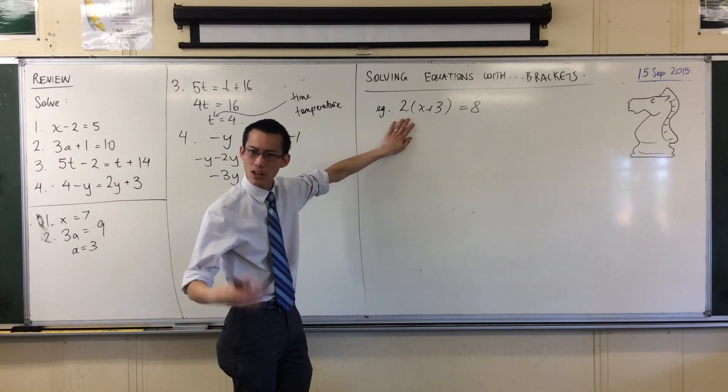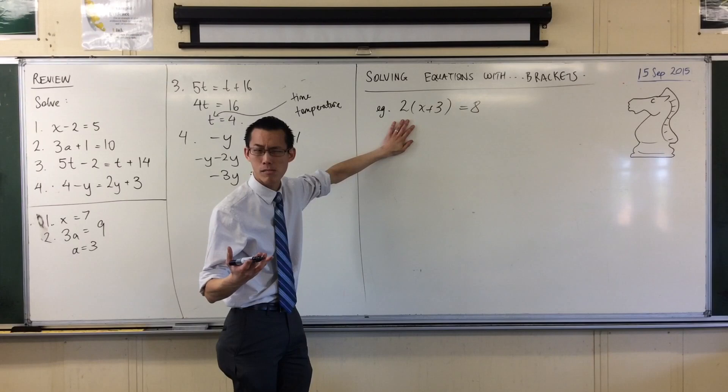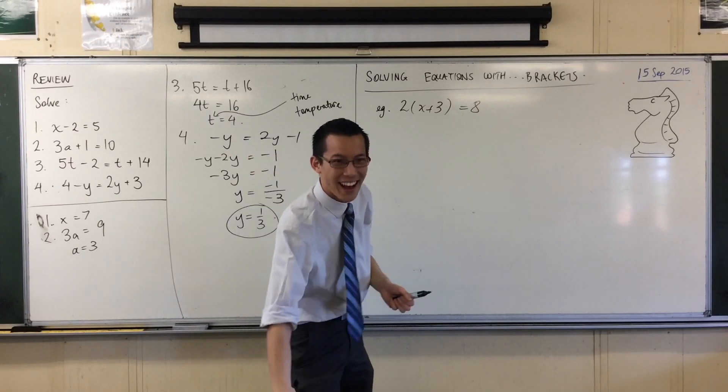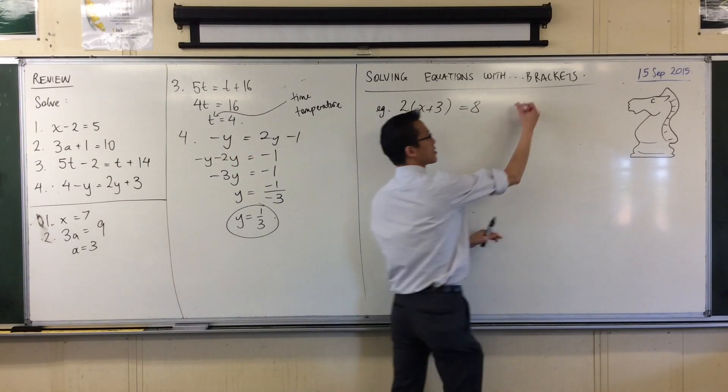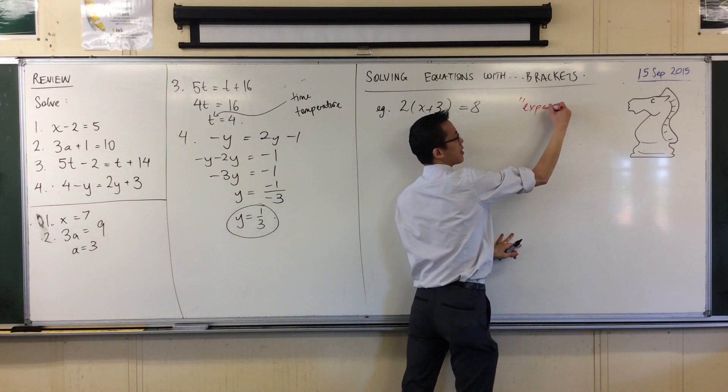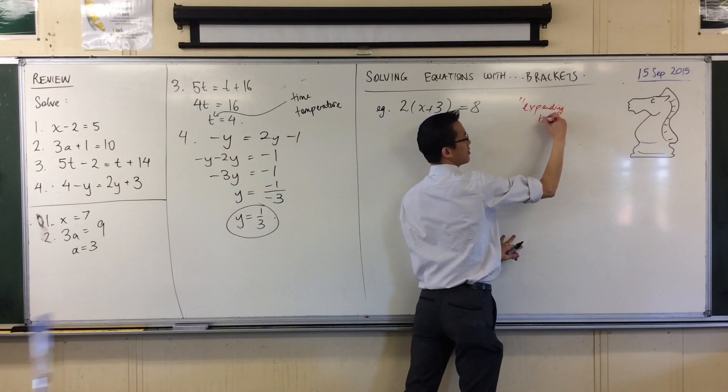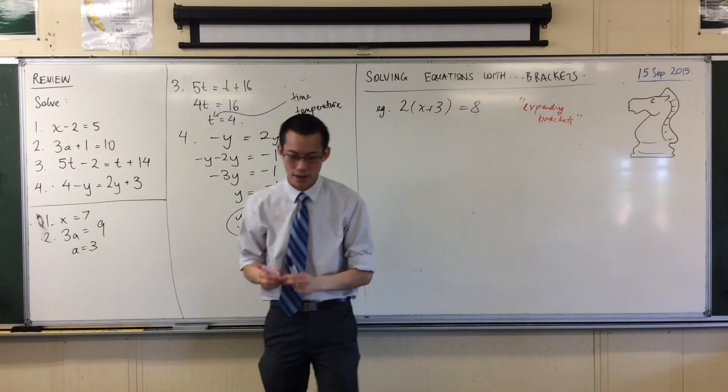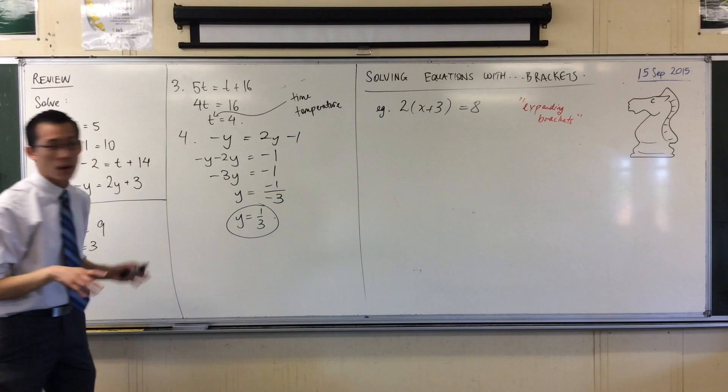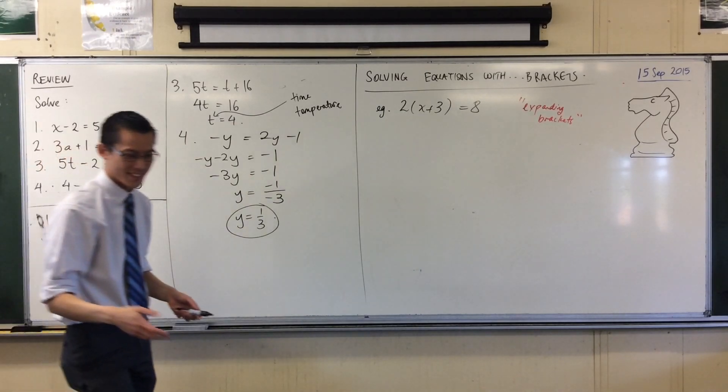When I get rid of these brackets, what's that called? It starts with an E. To get rid of the brackets, what I usually call that is expanding. Do you remember that? Expanding? [Student: Is it like 2x plus 1x?] Yeah, good. So you remember this. So what I want to do is get rid of my brackets.